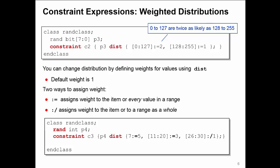So my constraint C3 here, I have 7 which has an individual weight of 5. All the values in the range 11 to 20 have an individual weight of 3.